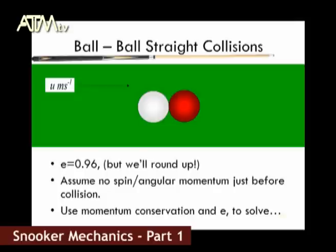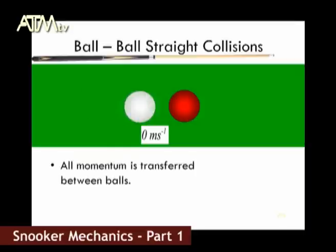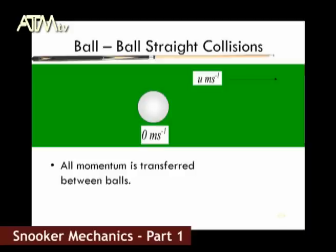This is what happened: the object ball left whilst the cue ball remained stationary. Therefore, by conservation of momentum, the object ball left with the same velocity as which the cue ball originally had, and the cue ball had 0 meters per second. Therefore, all the momentum was transferred from the cue ball to the object ball.